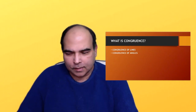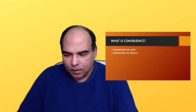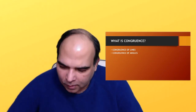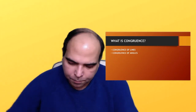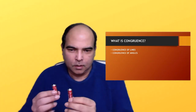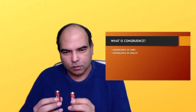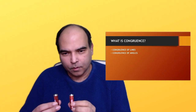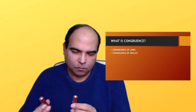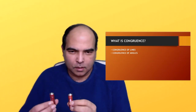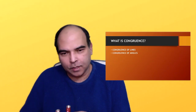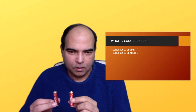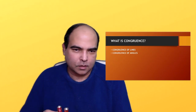When you talk about congruence, congruence basically means the equality of two things — when two things are exactly the same as each other. For example, if I pick up these two batteries, they are congruent to each other because they are exactly the same in terms of dimensions, angles, heights, and diameters. So these two are essentially congruent objects.